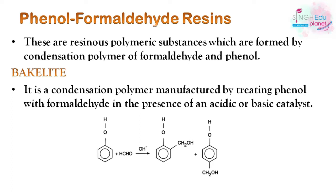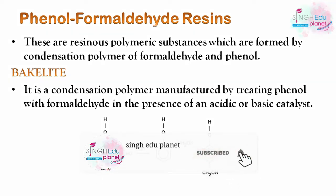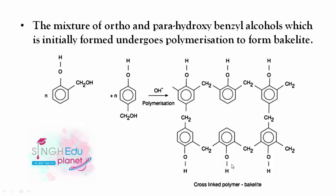Using a basic catalyst, we get a mixture of ortho and para hydroxybenzyl alcohols — the first is the ortho isomer and the second is the para isomer. This mixture of ortho and para benzyl alcohols which is initially formed then undergoes polymerization.